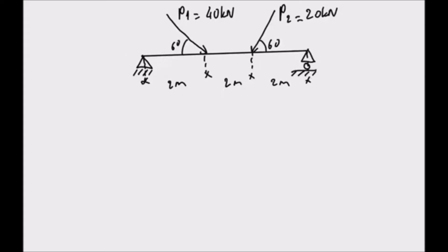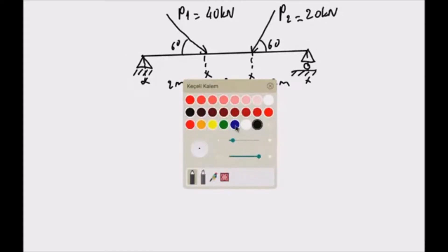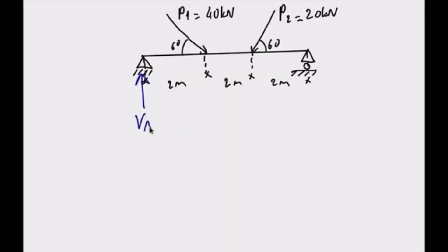The system in the figure has a pin support and roller support. Pin support has two reaction forces: vertical reaction force VA and horizontal reaction force HA. I call this pin support A, therefore I'm writing A under the reaction force. I also call this roller support B and it has a vertical reaction force, and I'm writing B under the reaction force.